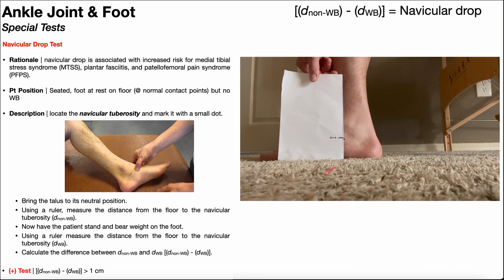The other way you can do this is you can have a piece of paper like this, and you can simply mark where the navicular tuberosity is in that position.